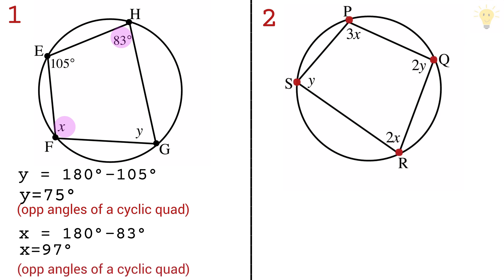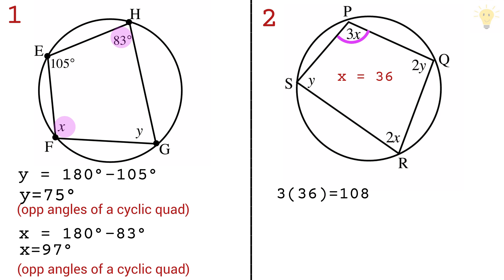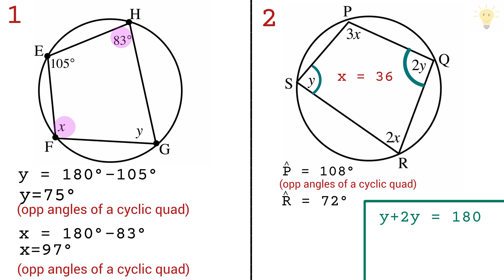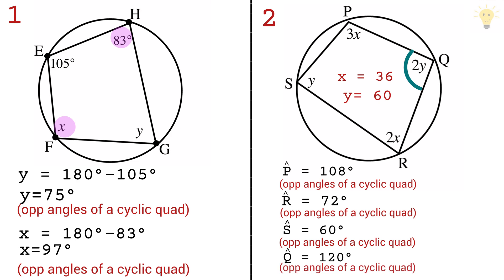In example 2, all four corners lie on the circumference, so it is a cyclic quadrilateral. The opposite angles give 3x plus 2x equals 180, so 5x equals 180, meaning x equals 36. This gives angles of 108 degrees and 72 degrees. For the other pair, y plus 2y equals 180, so 3y equals 180, meaning y equals 60 degrees. Angle S is 60 degrees and angle Q is 120 degrees.